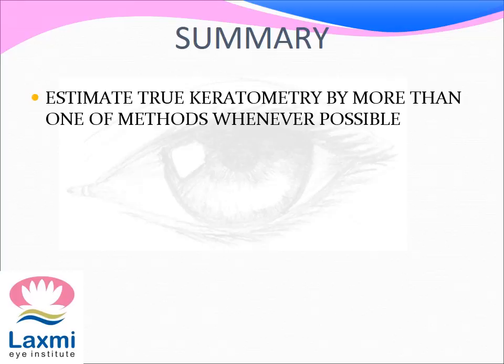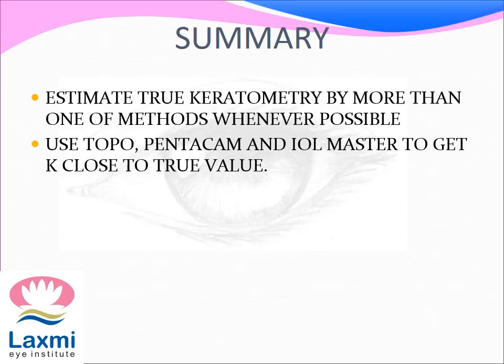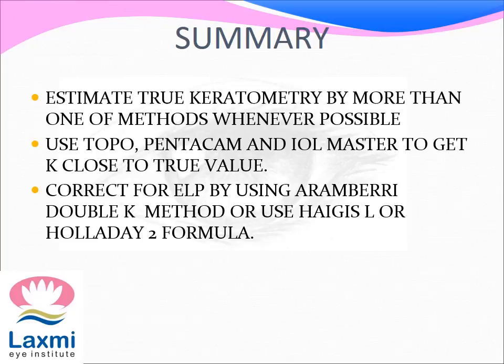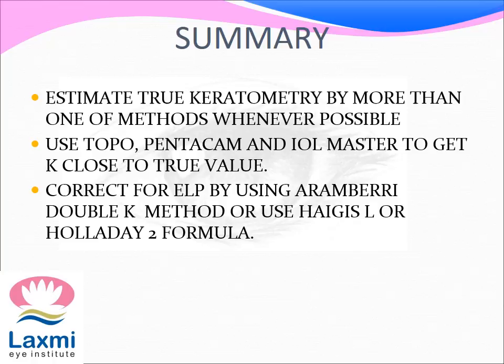In summary: estimate true keratometry by more than one method whenever possible; use topography, Pentacam, and IOL Master to get K close to the true value; correct for ELP by using the Aramberri double-K method or use Haigis-L or Holladay 2 formula; and keep patients informed about the possibility of a refractive surprise. Thank you very much.